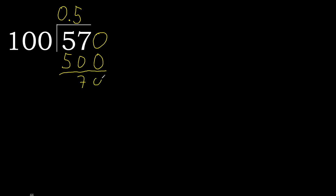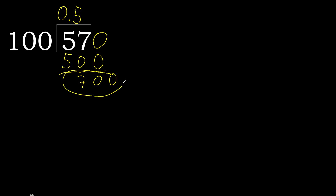Subtract 70. That is no number, therefore complete — always complete with 0. Here: 0 point, 0 point. 700. 100 multiplied by 7 is 700.